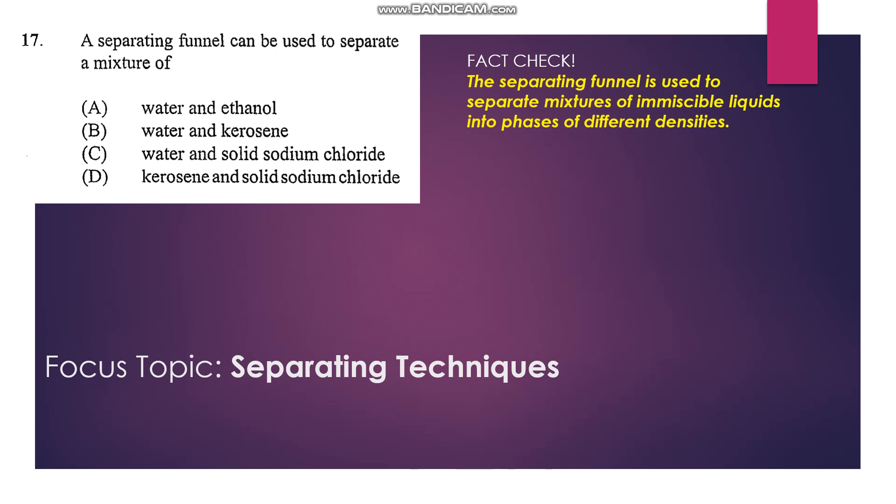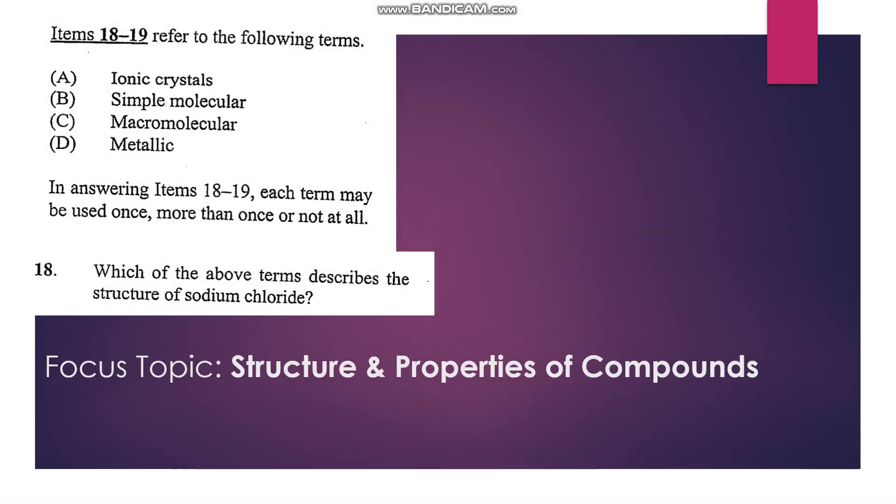Numbers 18 to 19 use the following four terms: ionic crystals, simple molecular, macromolecular, and metallic. Number 18 says which of the above terms describes the structure of sodium chloride? Know that sodium chloride is an ionic substance and it exists as crystals—ionic crystals would be our answer. That's A.